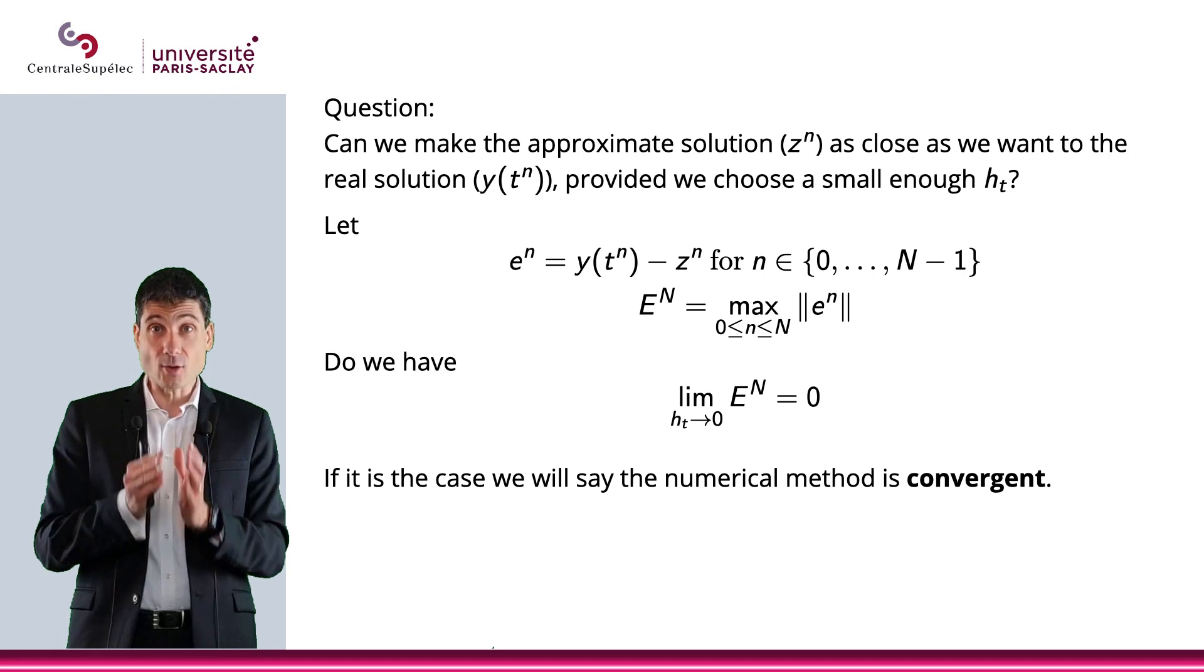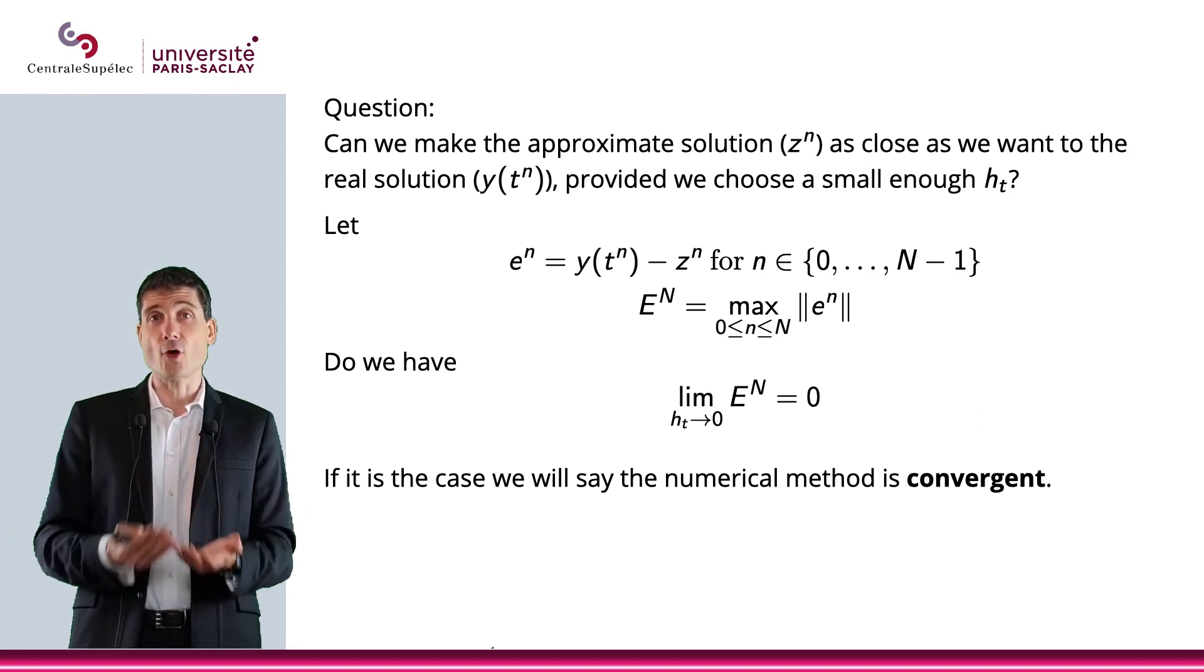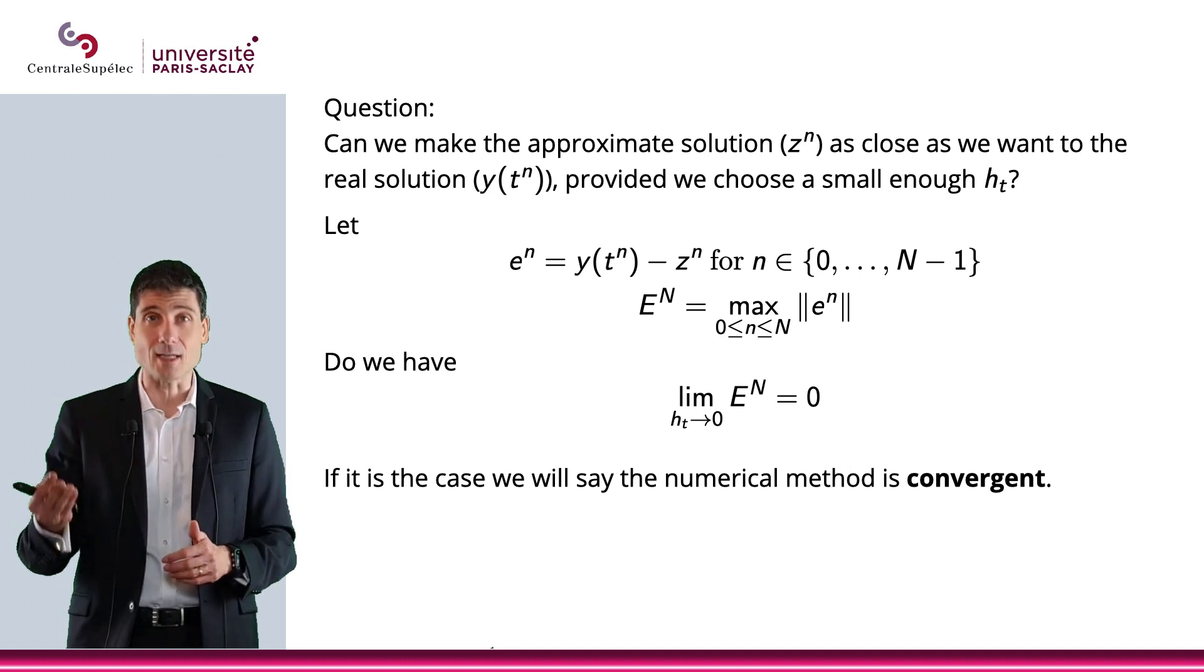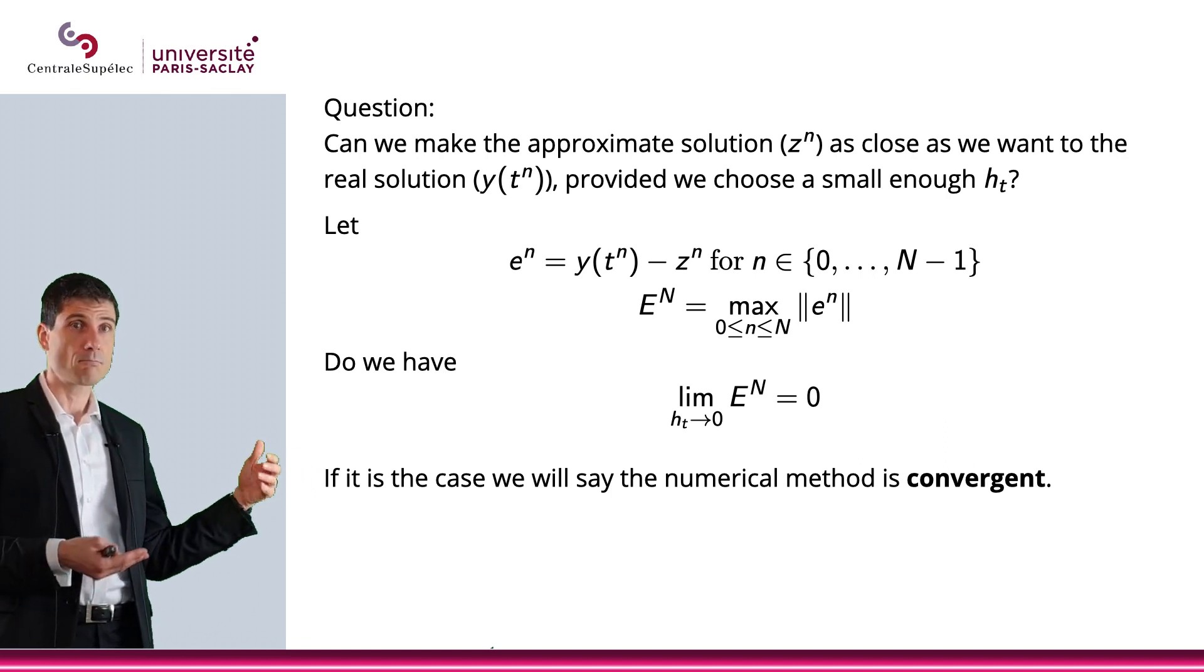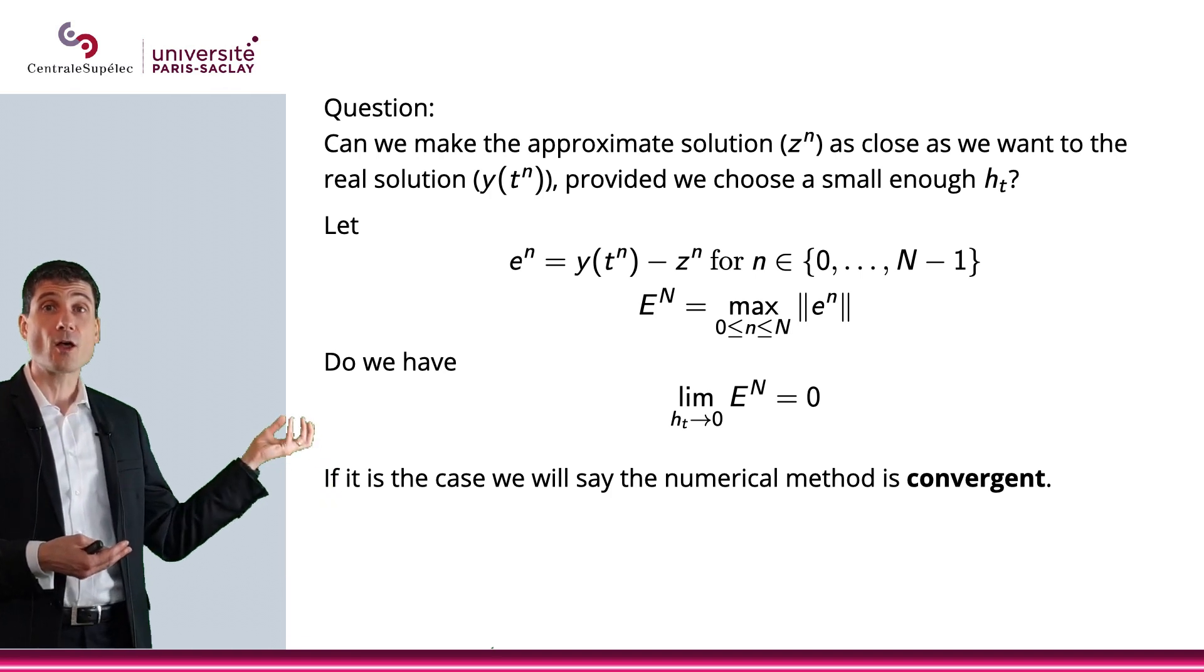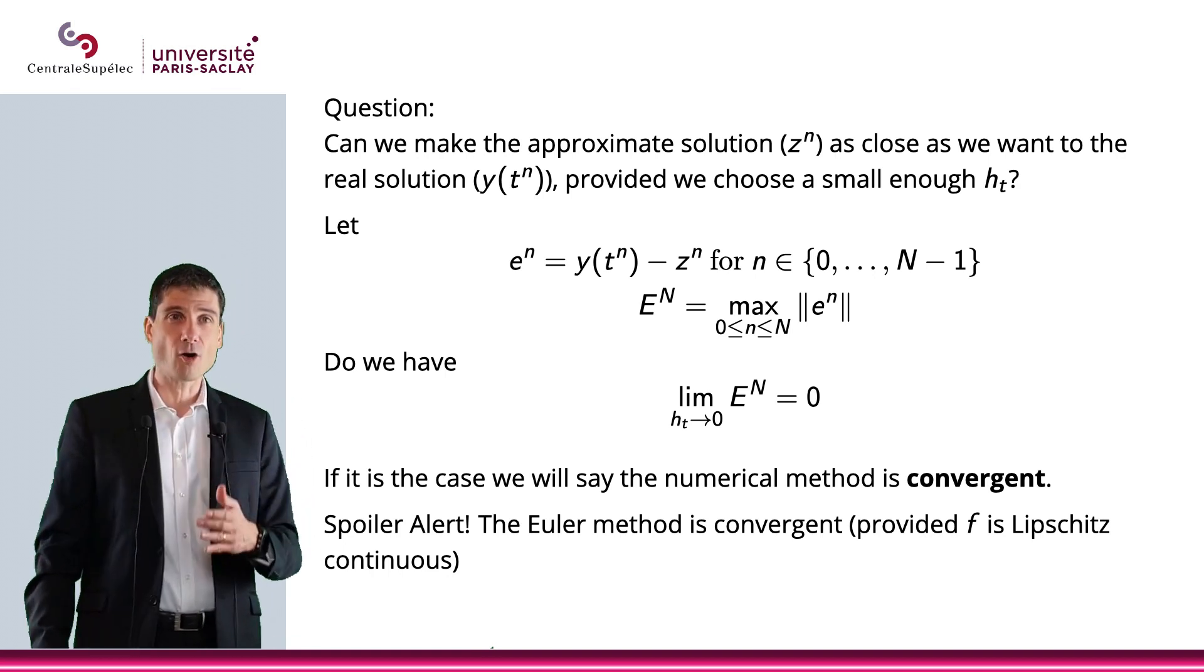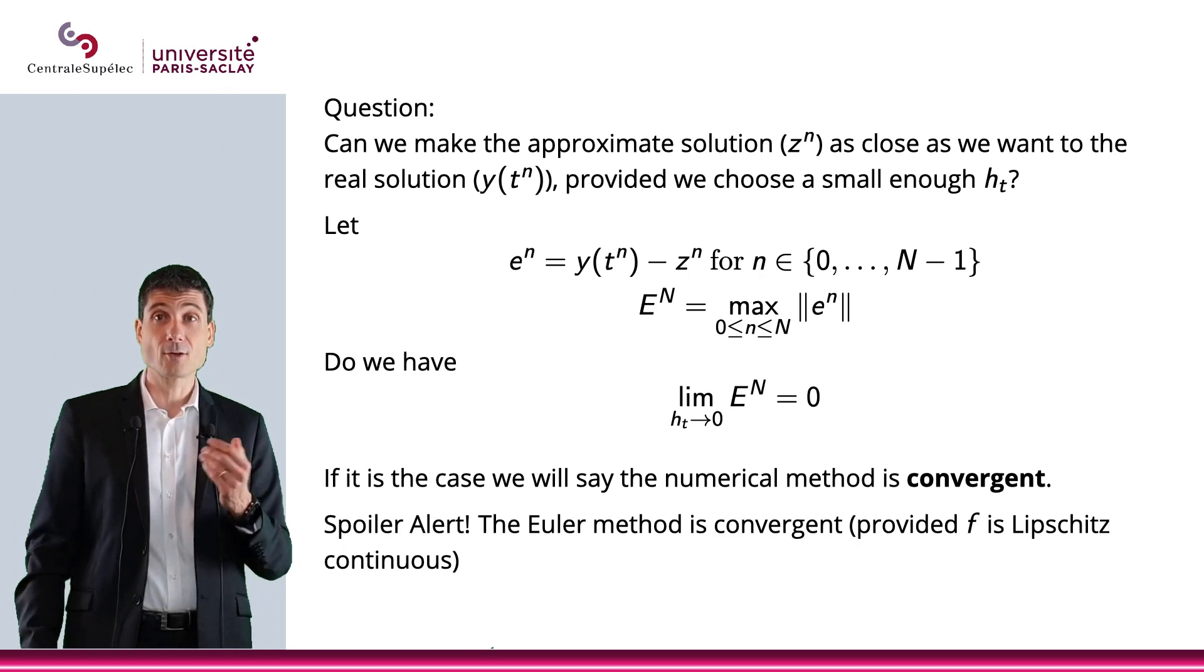And if that is the case, then we will say the numerical method is convergent. And indeed, if I want an error which is bounded by epsilon, say for instance 10 raised to negative 16, then I will be able to find a HT that will be maybe very small, but at some point there will be an HT for which that can be achieved. Spoiler alert, the Euler method is convergent, provided that F is Lipschitz continuous.